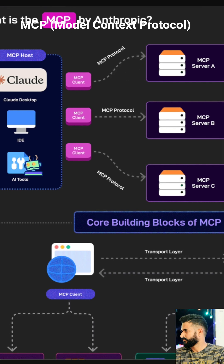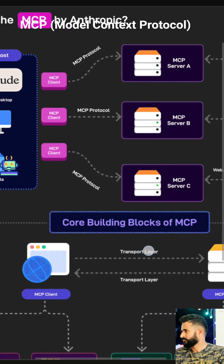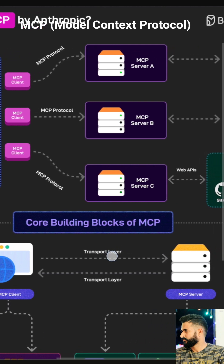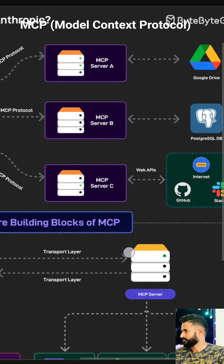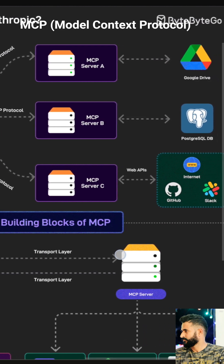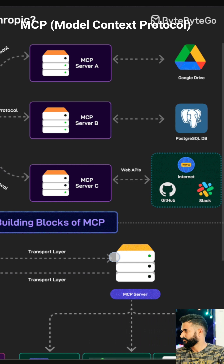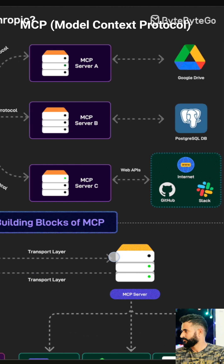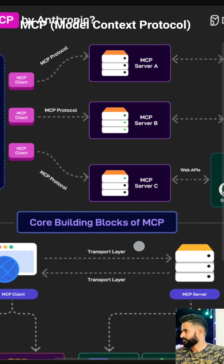Resources are the external data sources and tools that Claude can access. Tools and functions are the specific actions that Claude can perform, such as searching the web, sending emails, or running code. The Transport Layer ensures secure communication — it ensures that communication between the MCP client and servers is secure and reliable. It's like the armored truck that carries the information.